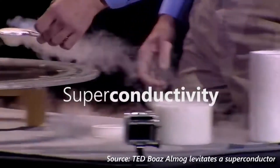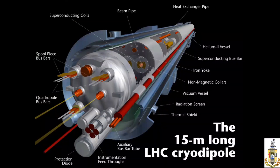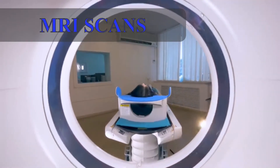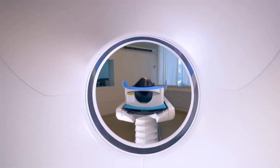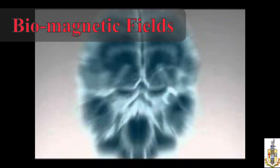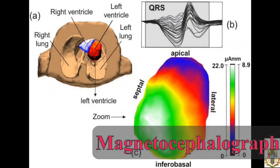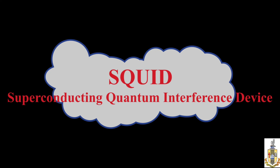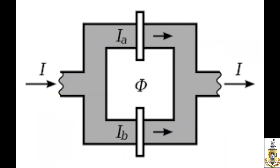They find extensive applications in lossless power transmission, magnets producing very high magnetic fields, and are extensively used in the field of medicine in magnetic resonance imaging (MRI) scans, and to evaluate extremely weak biomagnetic fields originating from different organs in magnetoencephalography, magnetocardiography, and liver susceptometry using superconducting quantum interference devices, referred to as SQUIDs.